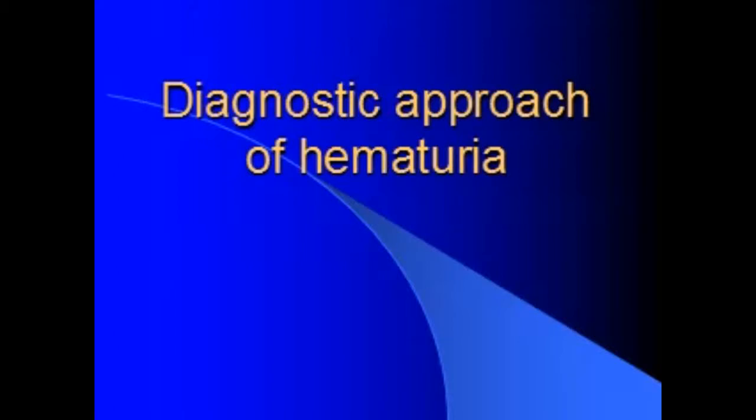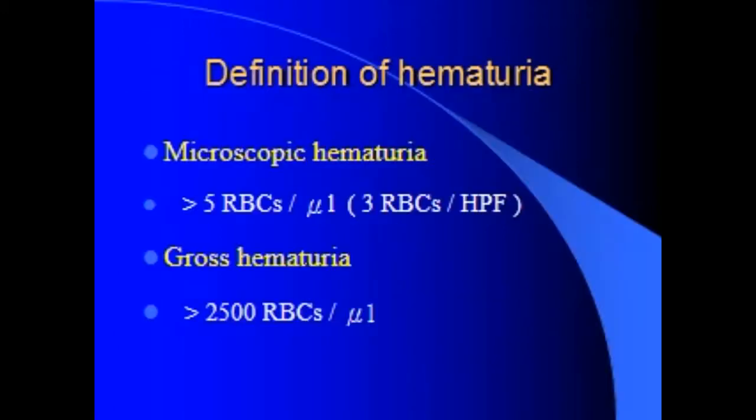Diagnostic approach of hematuria. Definition of hematuria: Microscopic hematuria means 5 RBCs per microliter or 3 RBCs per high-power field. Gross hematuria means 2500 RBCs per microliter.